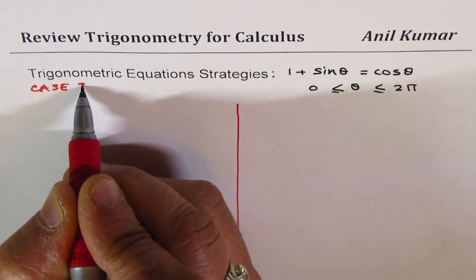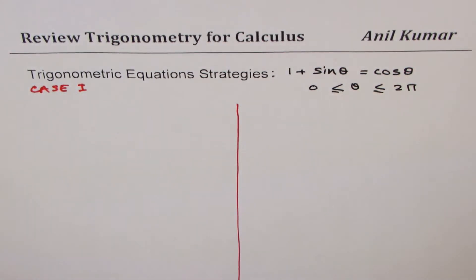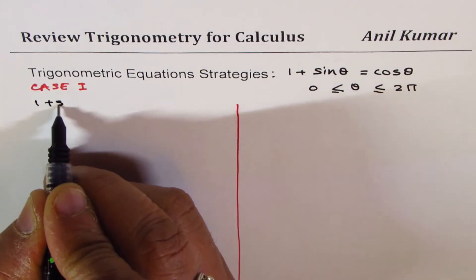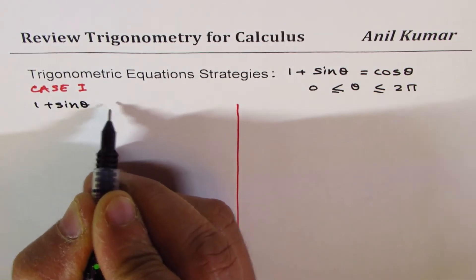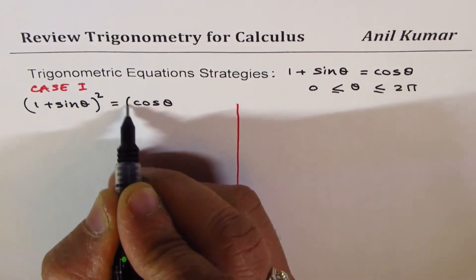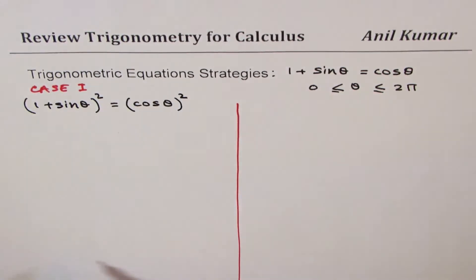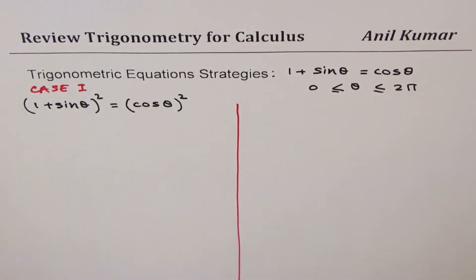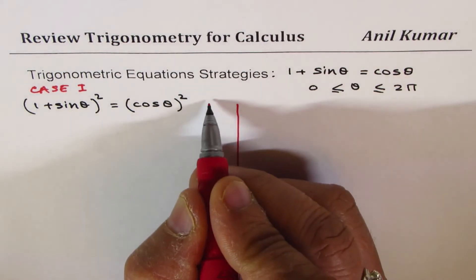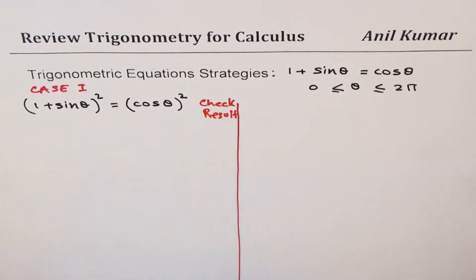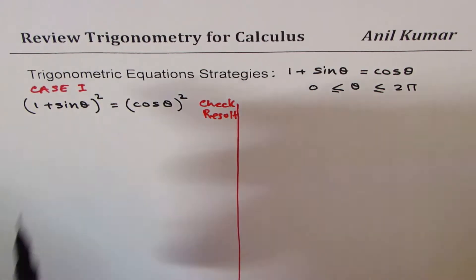In Case 1 we will square both sides and then solve. The equation given to us is 1 plus sine theta equals to cosine theta. We'll square both sides. Now, once you square you actually incorporate errors, so you should check for errors. When you square, minus becomes positive — so you need to check the result. This is important.